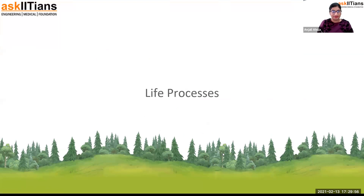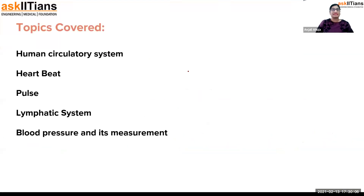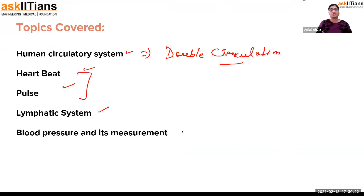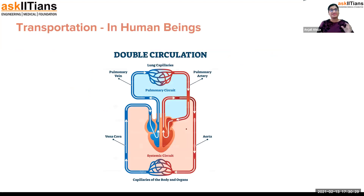You can see my screen clearly. So the first thing we are going to cover is the human circulatory system. We are actually done with this topic — it's just the discussion about double circulation that we are left with. That will be a revision. We'll also cover heartbeat, pulse, lymphatic system, and blood pressure and its measurement.